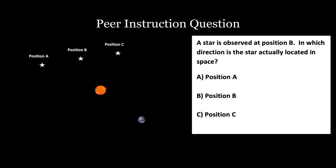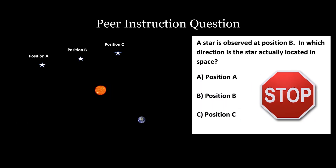Let's explore this in a peer instruction question. If a star is observed very near the surface of the Sun at position B, in which direction would its actual position be located? Classroom students should follow normal procedures or instructor guidelines. Viewers not in a classroom should record your vote and explain your reasoning on a piece of paper. Please pause this video and answer the question.